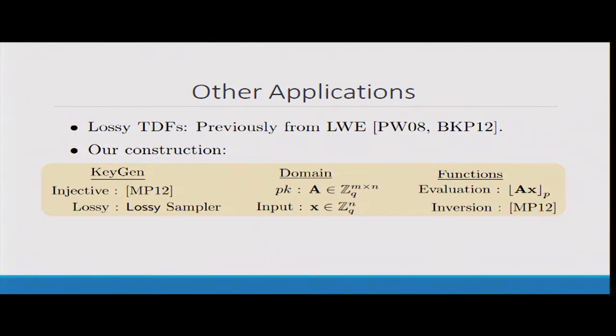Now I'll turn quickly to some of the applications, which again use the same technique. In particular, we construct lossy trapdoor functions. One thing to notice here is that the function evaluation is super simple. It is essentially the learning with rounding assumption is the evaluation of the function. To sample the key in the injective mode, we use the results of Michiancho and Piker to sample A together with a trapdoor. To sample the public key in the lossy mode, we just use our lossy sampler.